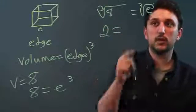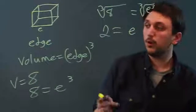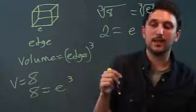And the cube root of E cubed, well that just cancels itself out, is E. So what we basically do is we take the cube root of the volume and we get the edge.